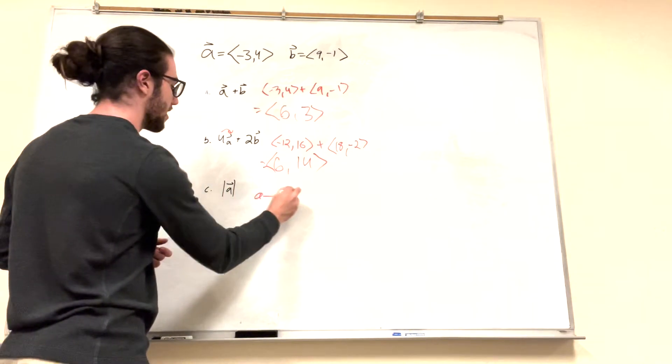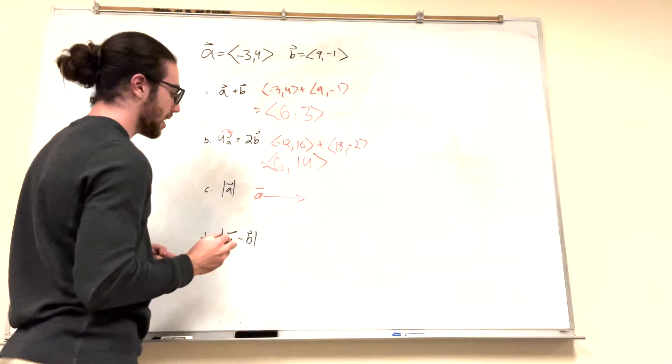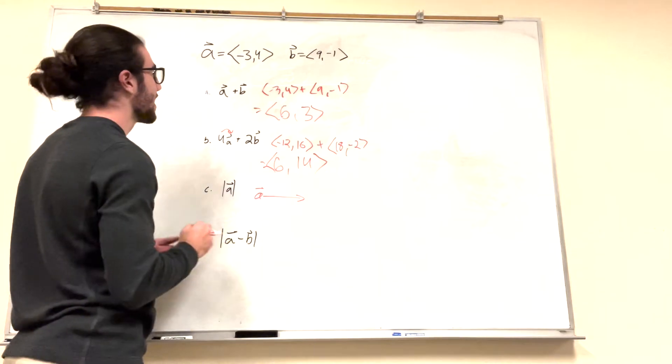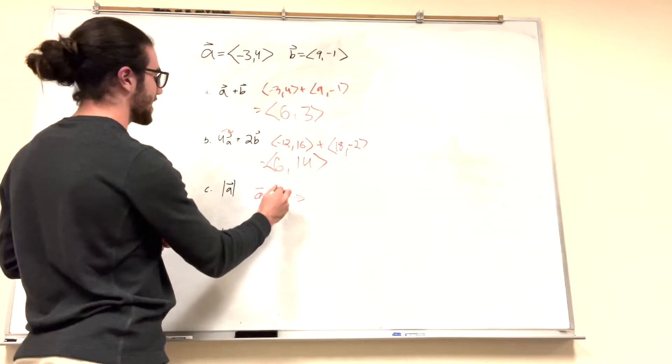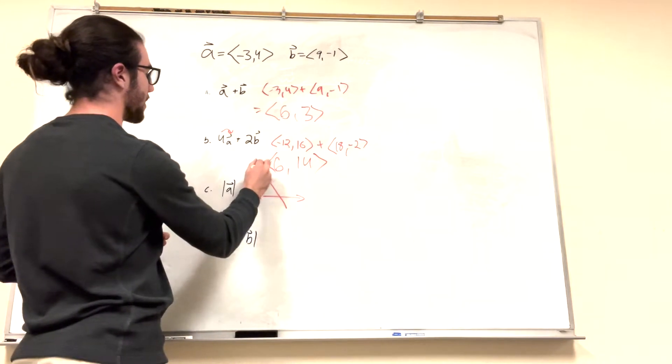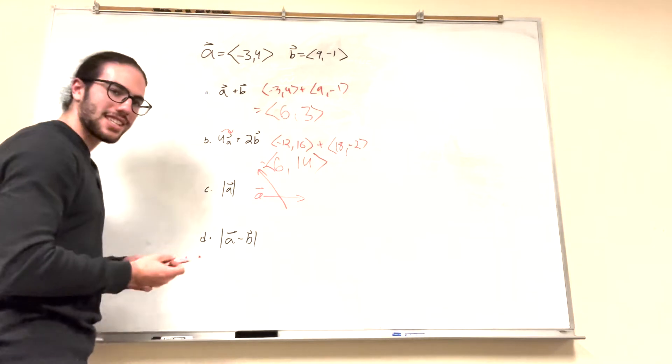It says, this is a. Boom, that's a. But it says, what is the distance of a? So a is like negative 3, 4. So you can imagine that kind of as what a actually looks like. It says, what's the distance of that?